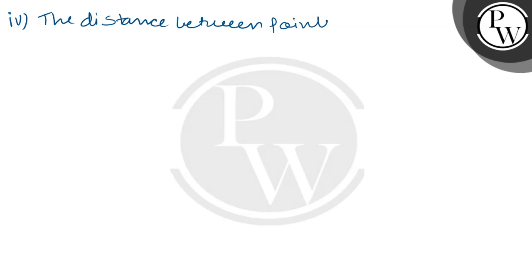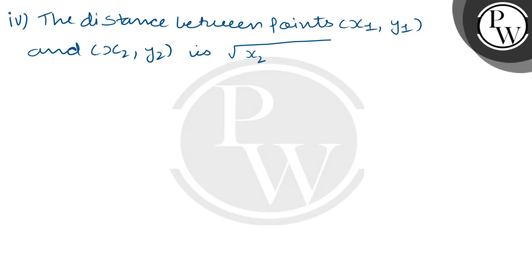The fourth key concept: the distance between points (x1, y1) and (x2, y2) is the square root of (x2 - x1)² + (y2 - y1)².